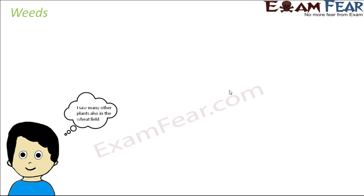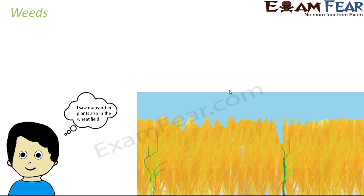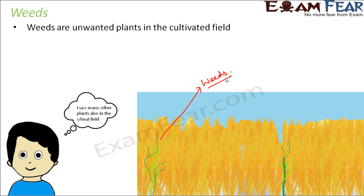So what are weeds? Weeds are unwanted plants present in the field. When visiting a wheat field, you can see it is not only the wheat plants but also some other plants scattered here and there. These unnecessary plants present in the field are called weeds. If you want to cultivate wheat, the entire field should have only wheat plants, but in between you find these unwanted plants — those are the weeds.